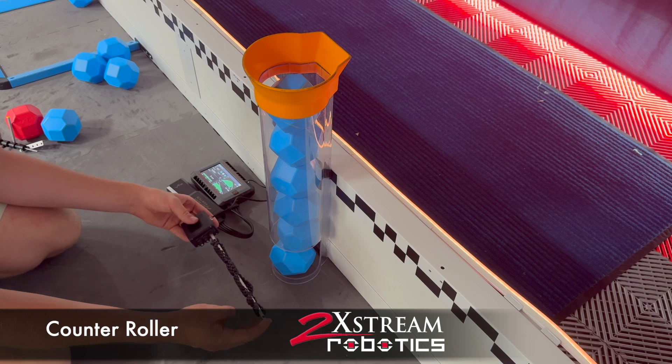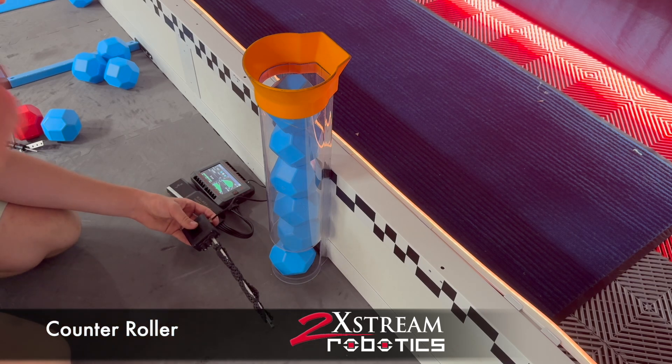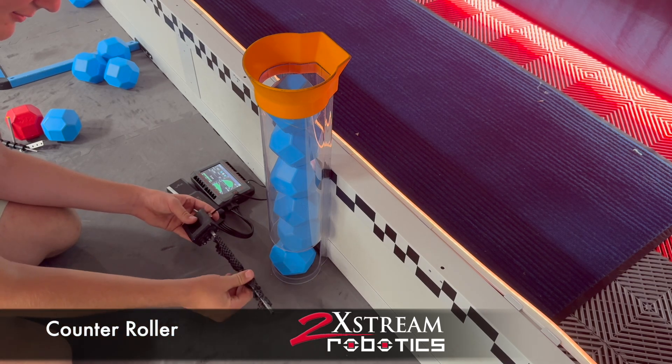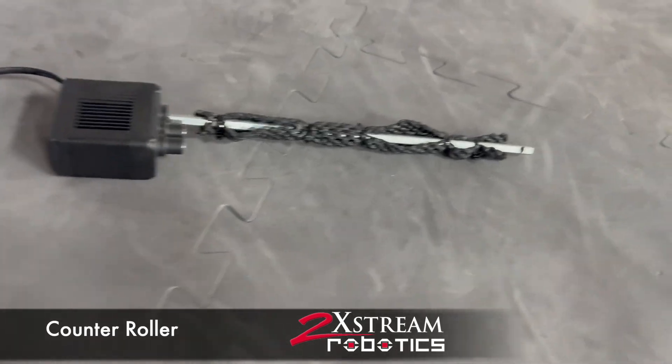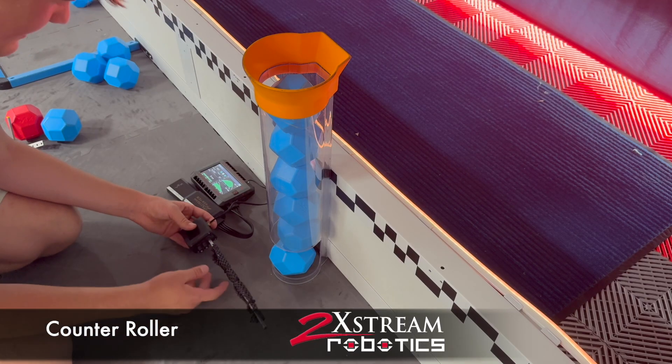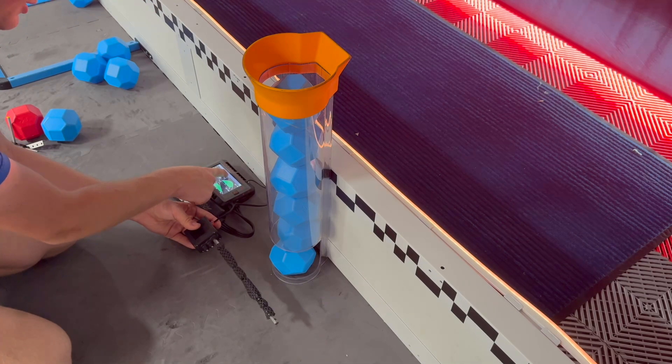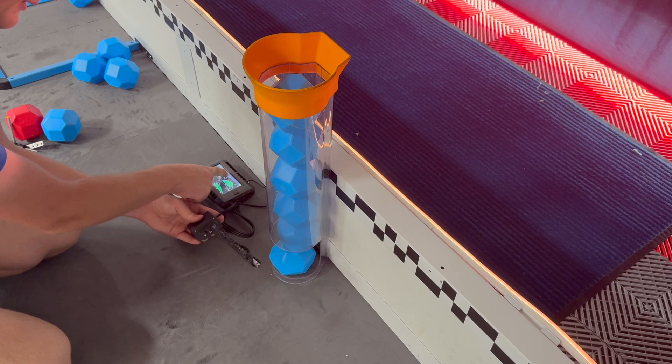The third type of mechanism I want to talk about is a counter roller. The counter roller uses some sort of bar with rubber bands or mesh or omni wheel rollers on it. And what it basically does is it'll just spin a bar with something grippy on it the opposite way.